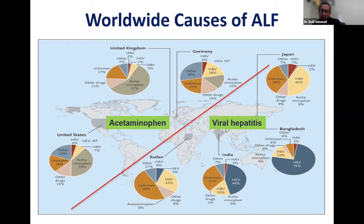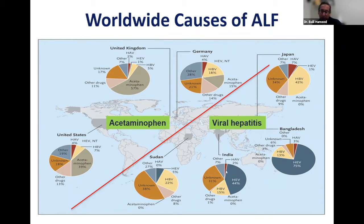If you look at other parts of the world: in Japan, 42% was hepatitis B. In Bangladesh and India, a huge number of patients have hepatitis E — in Bangladesh about 75%, and in India 44%. The data from Africa, mostly from Sudan, showed hepatitis B at 22% and hepatitis E at 5%. There were no cases of acetaminophen in Sudan, India, Bangladesh, or Japan. Unknown causes can be increased, possibly due to undiagnosed viruses.